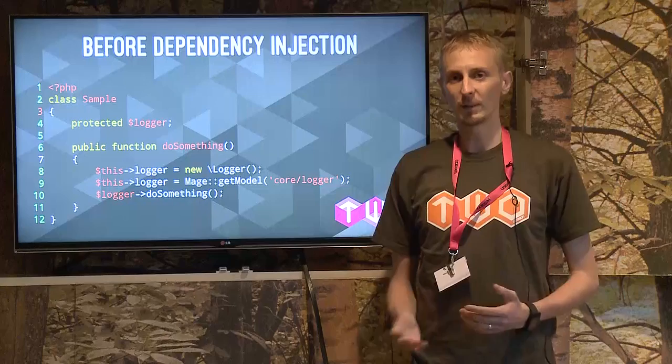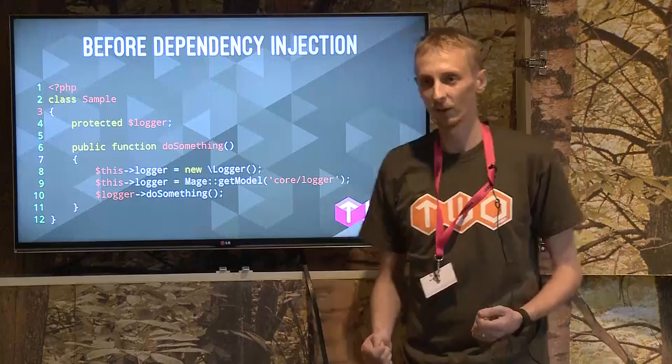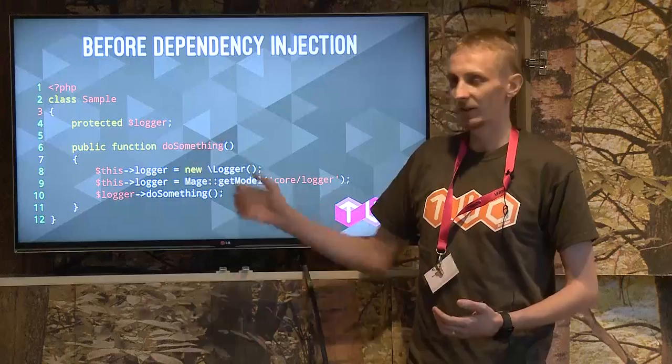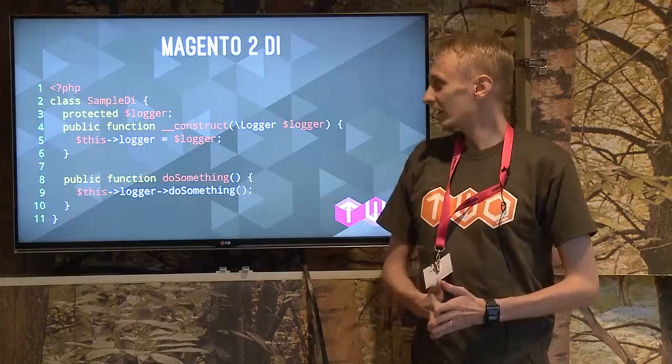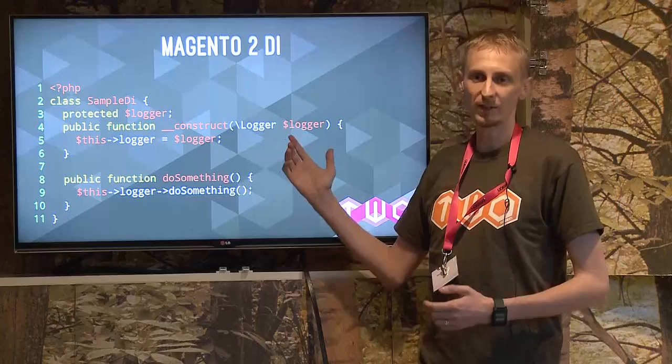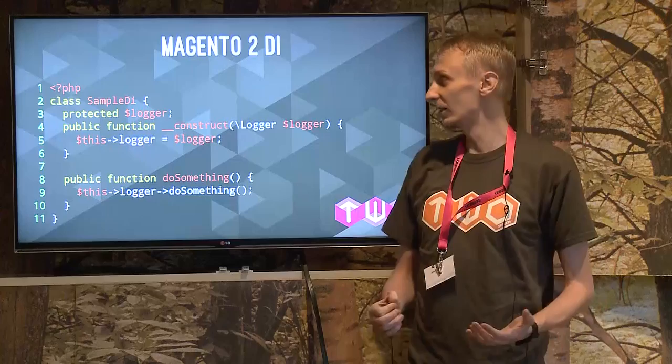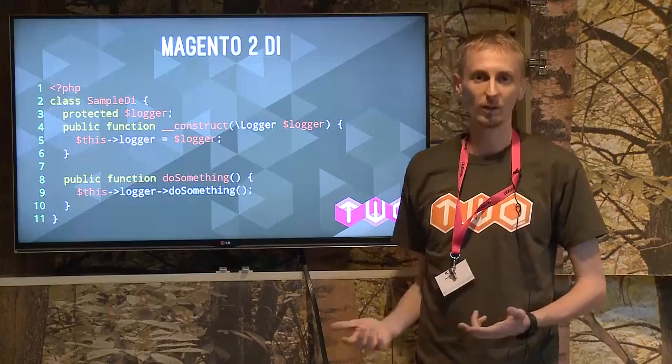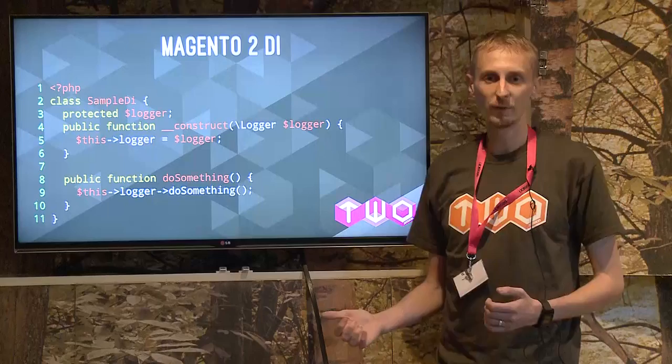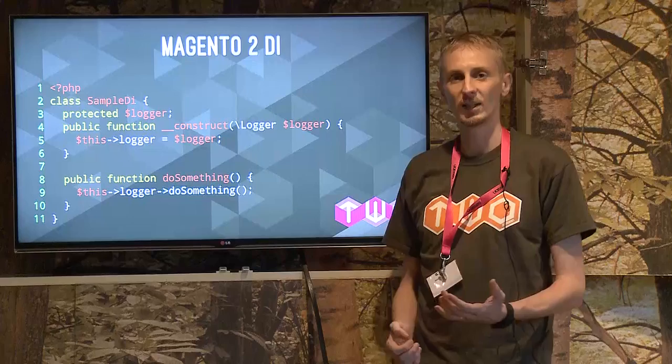Before dependency injection in Magento 2, we'd either call new Logger — creating a new instance of the logger class — or we'd use Mage::getModel('core/logger'). In Magento 2, all we now need to do is type-hint on the logger interface, pass it in via the constructor argument, and we can use logger at will. That gives us the advantage of being able to replace logger at runtime — if we wanted to use Monolog instead of the default logger, we can use di.xml to swap out that implementation. We'll also go through how we can use dependency injection to swap out the template engine from normal HTML to using Magento Twig in two lines of code.